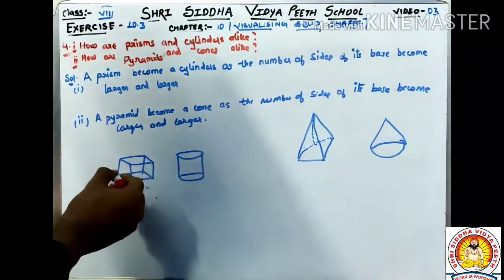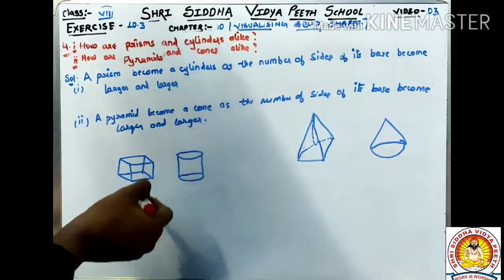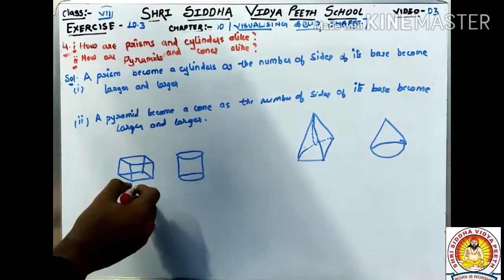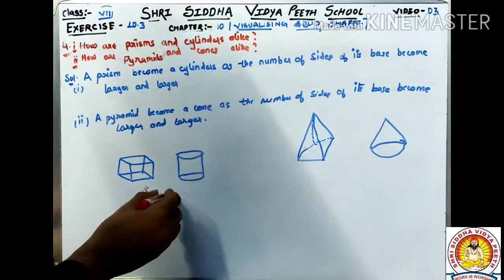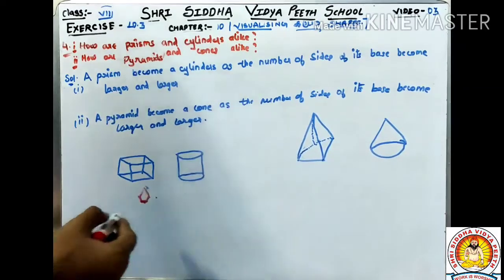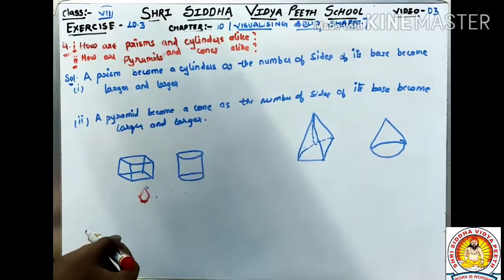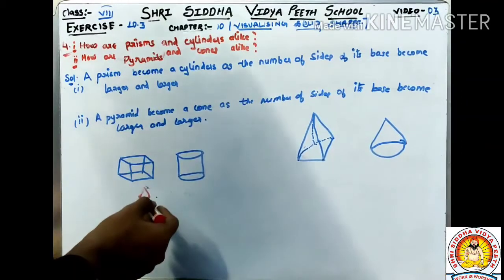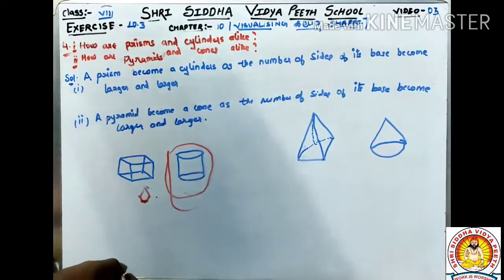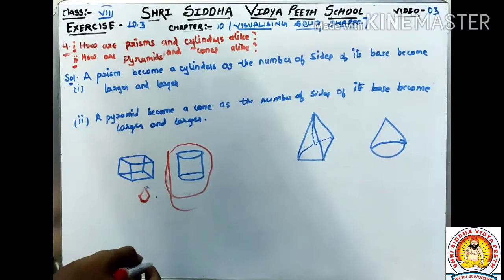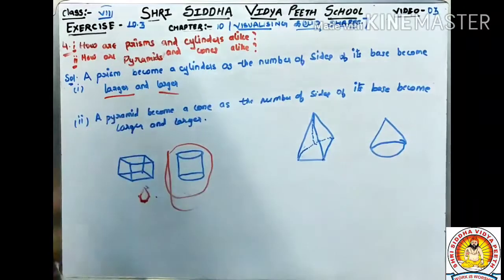When we increase the number of sides of the base — for example, if we have 4 sides, then 5 sides, then 6 sides — as the number of sides keeps increasing, after some time the prism will take a shape like a cylinder. So the answer is: a prism becomes a cylinder as the number of sides of its base becomes larger and larger.